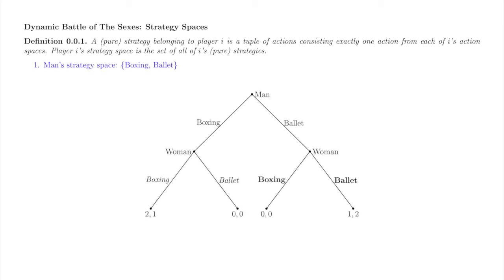First, let's identify the man's strategy space. He has a single move, so his action space and strategy space coincide. Here is his strategy boxing, in blue. And here is his strategy ballet, also in blue.